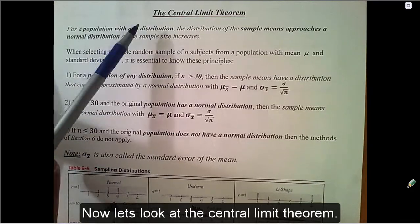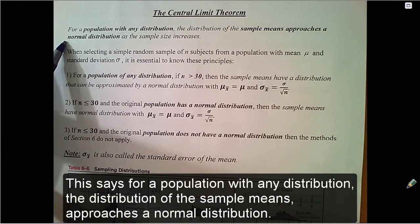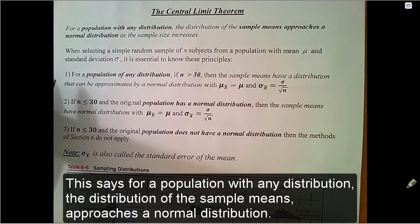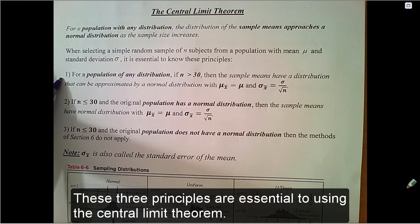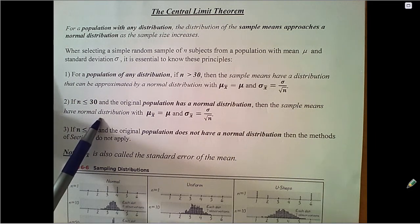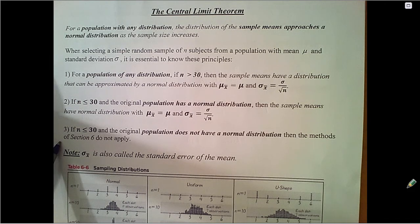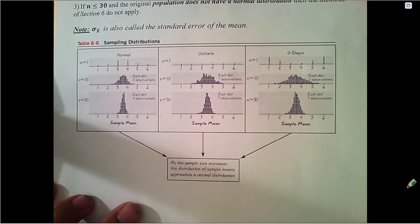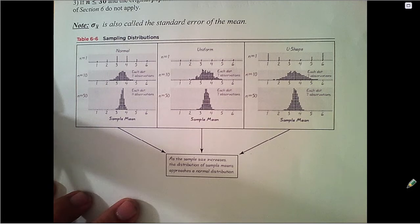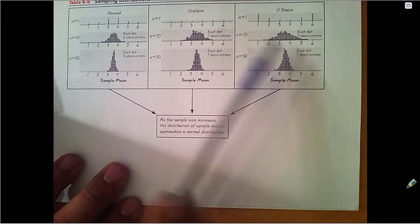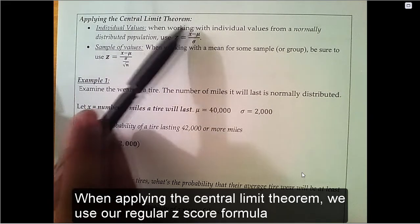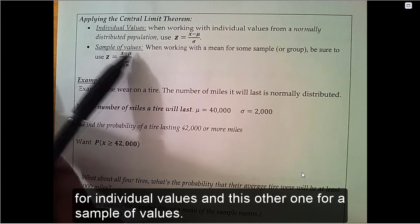Now let's look at the central limit theorem. This says for a population with any distribution, the distribution of the sample means approaches a normal distribution. These three principles are essential to using the central limit theorem.